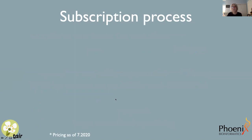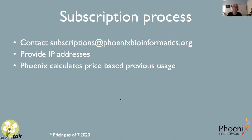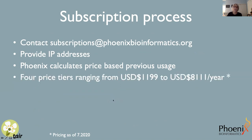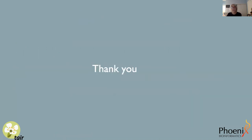For those interested in subscribing on behalf of their institutions, contact us at subscriptions@phoenixbioinformatics.org. Provide your IP addresses, which we'll use to calculate a price based on your previous usage. There are four price tiers ranging from about $1,000 to about $8,000 per year, with discounts available for multi-year subscriptions or consortia members. All contracts are handled by email. If you have any questions about TAIR, contact us at curator@arabidopsis.org, and for subscription questions, contact subscriptions@phoenixbioinformatics.org. Thank you very much.